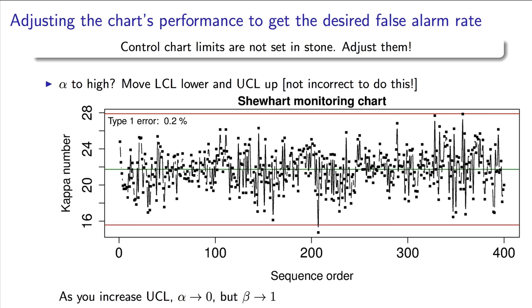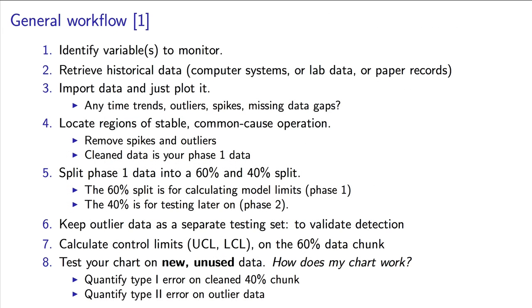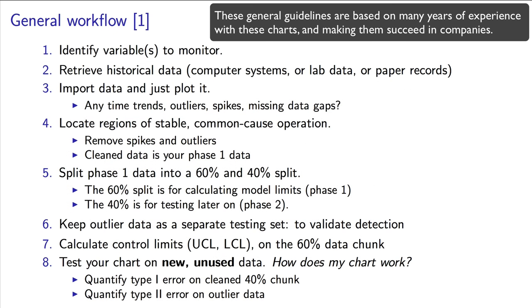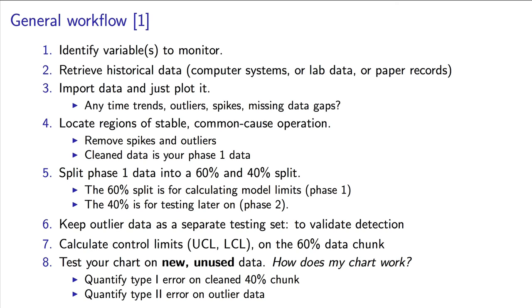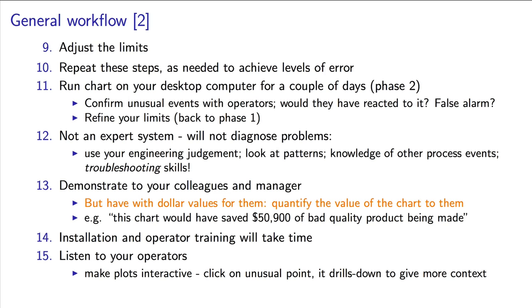There is never a free lunch. You cannot have low type 1 error as well as low type 2 error. One is always traded off against the other. So finding the right level for those bounds is absolutely critical for an effective monitoring chart. I cannot stress enough how much time is spent going into varying those limits to get just the right type 1 and type 2 error rates.